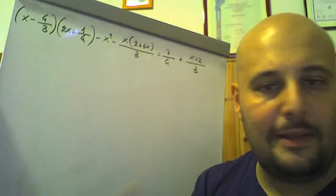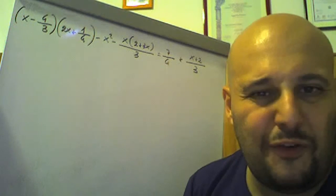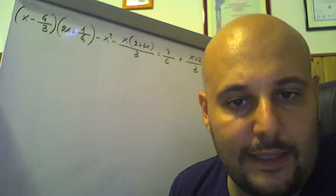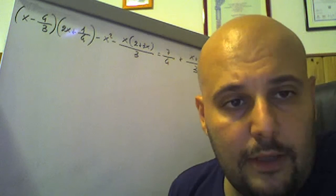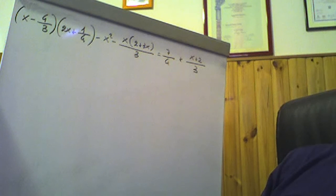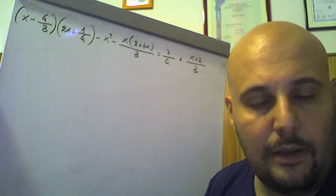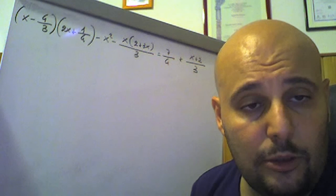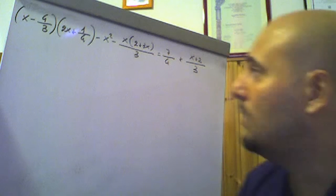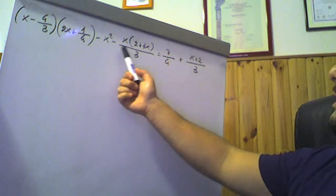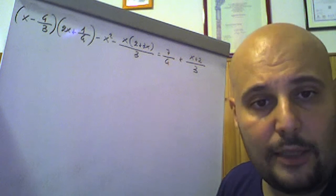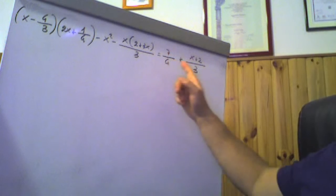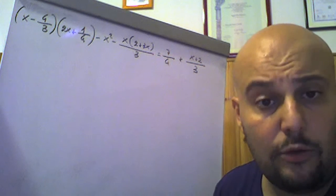Proseguiamo con un altro esercizio con coefficienti frazionali. Secondo esercizio: (x - 4/3)(2x + 1/4) meno x² meno [x(2+3x)]/3 uguale 7/4 più (x+2)/3.